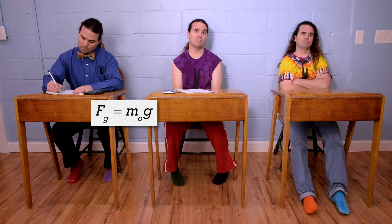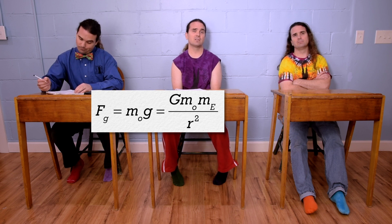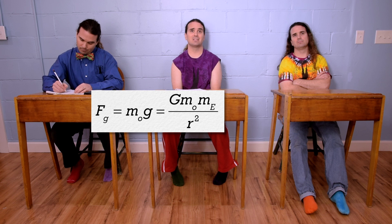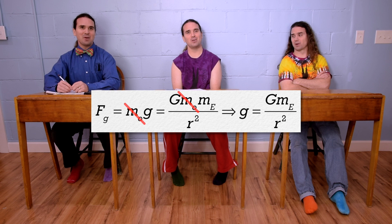Maybe. So going back to the beginning here, we need to set our original force of gravity equation: force of gravity equals the mass of the object times the acceleration due to gravity, equal to Newton's universal law of gravitation, or the universal gravitational constant times the mass of the object times the mass of the Earth, all divided by the distance between the centers of mass of the two objects. And everybody brought the mass of the object to the party.